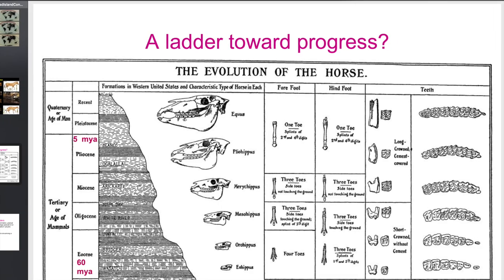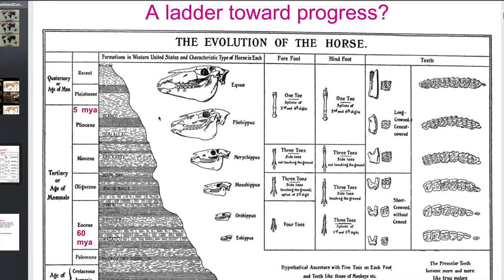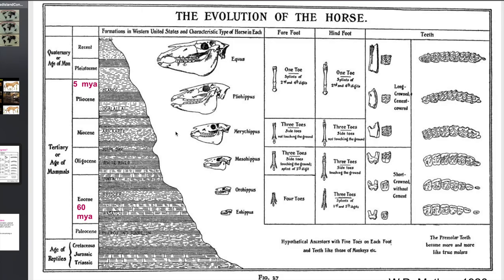The way the fossil record works — the reason those slides were organized from oldest to youngest, bottom to top — is because that's the way rocks are laid out. When you go out and find rocks with fossils, the oldest rocks are at the bottom and the youngest rocks are at the top. That's why the past few slides were organized the way that they were.